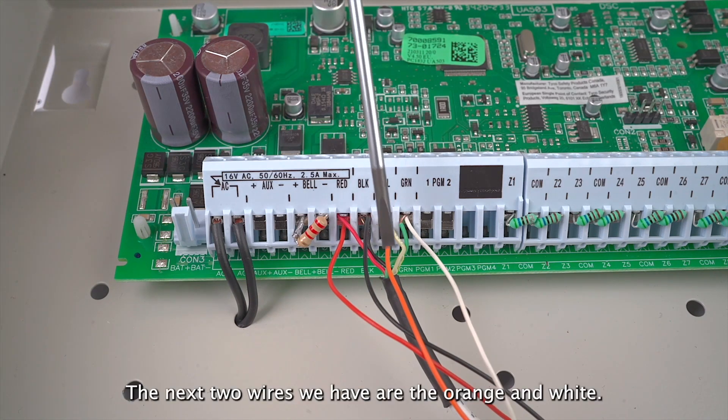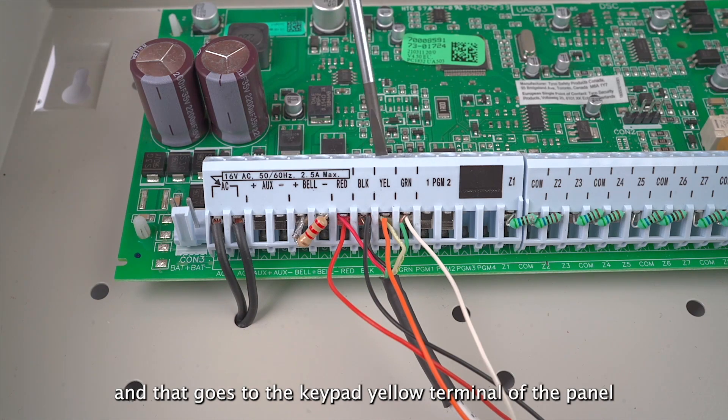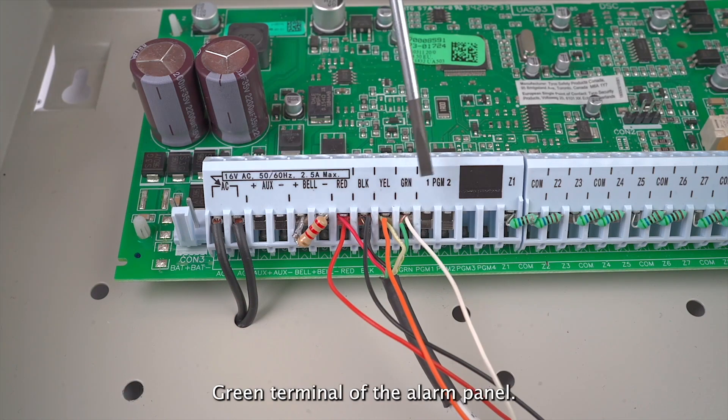The next two wires we have are the orange and white. The orange is our output wire and that goes to the keypad yellow terminal of the panel, and the white wire is our input, which goes to the keypad green terminal of the alarm panel.